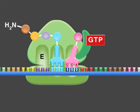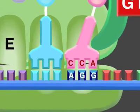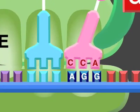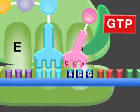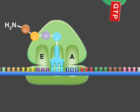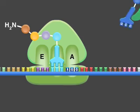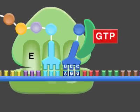If the anticodon of the charged tRNA does not match the codon in the messenger RNA, the tRNA is rejected. The process of trial and error repeats until the correct tRNA is identified.